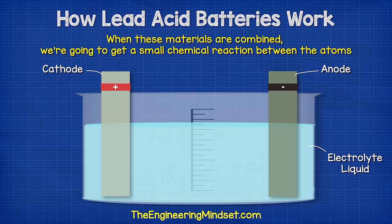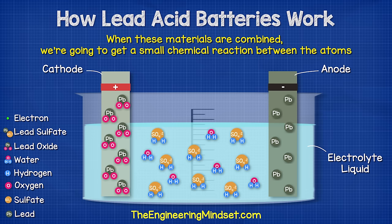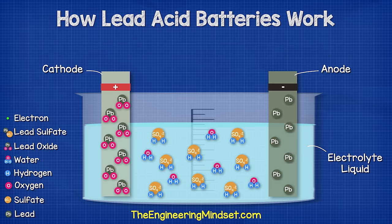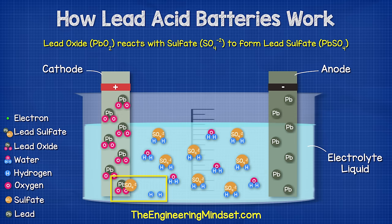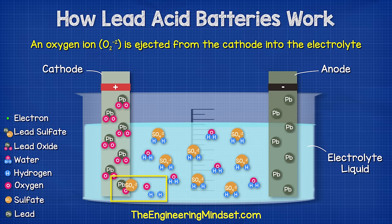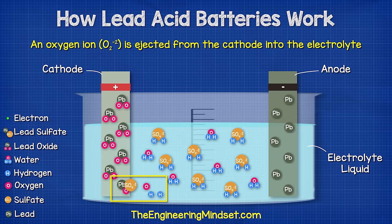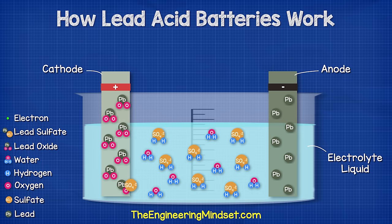The positive cathode terminal of lead oxide is going to react with the sulfate in the electrolyte. This will form a layer of lead sulfate on the cathode terminal. During this reaction an oxygen ion is ejected from the cathode and into the electrolyte. Once in the electrolyte, these oxygen ions will combine with the hydrogen ions to form water.